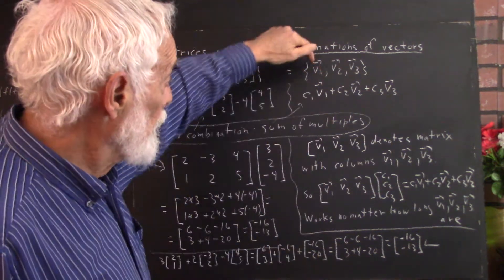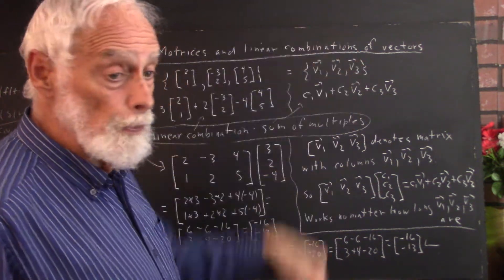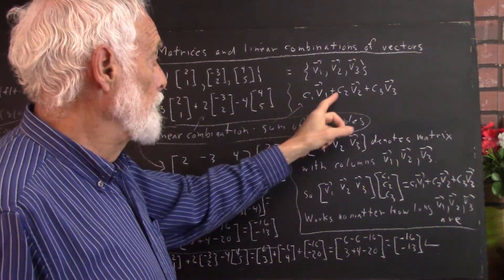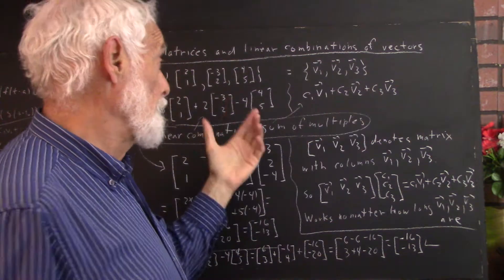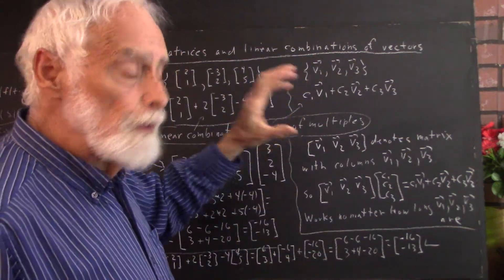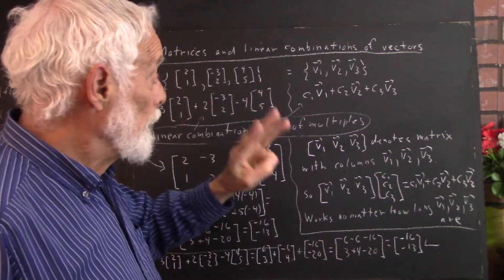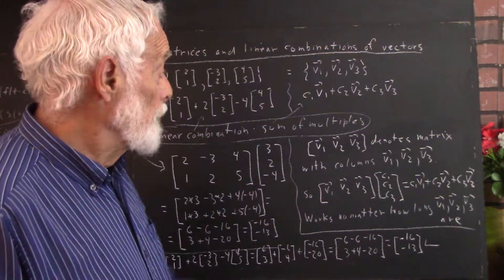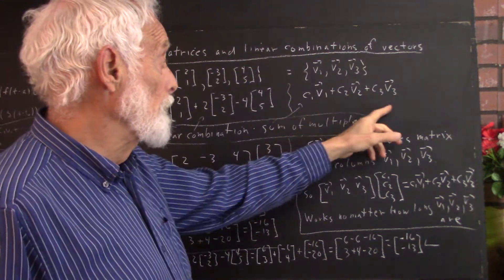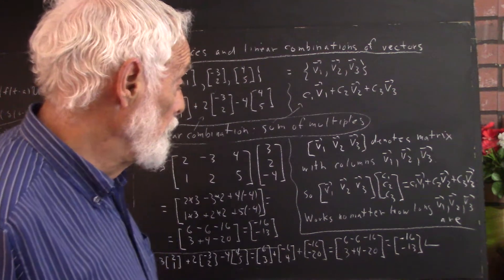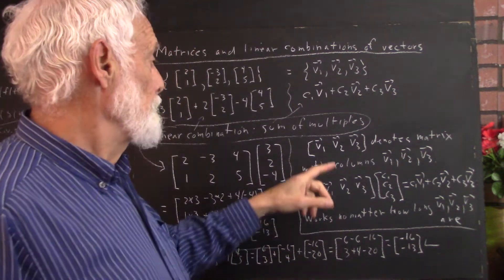Generalizing this, if we call the vectors v1, v2, and v3, and the multiples, the multipliers, c1, c2, and c3, instead of specific numbers, just to make this general, at least a general linear combination of three vectors, then the linear combination is going to look like this. The sum of multiples will always look like this if you have three vectors, v1, v2, and v3.